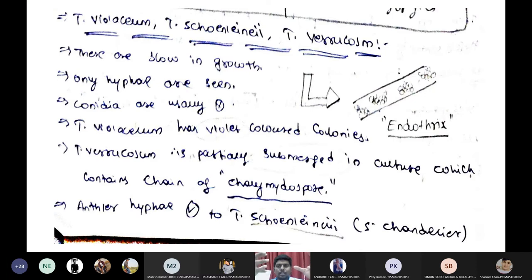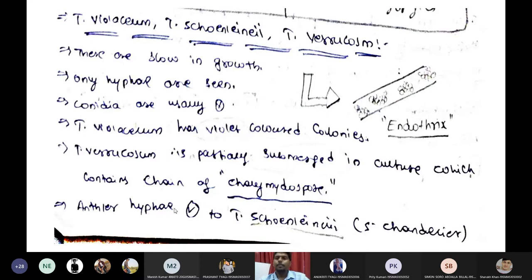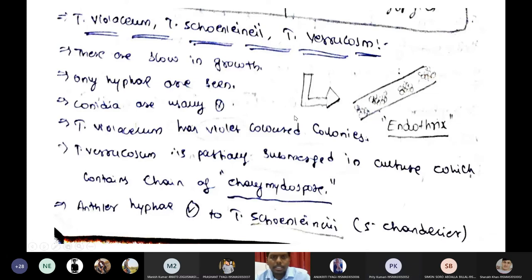The instructor asks students: in what Trichophyton species do you see grape-like clusters of conidia? A student answers correctly: T. mentagrophytes. The instructor confirms and asks whether it is urease positive or negative - the student answers urease positive, which is correct.